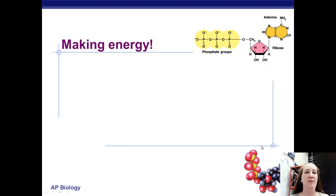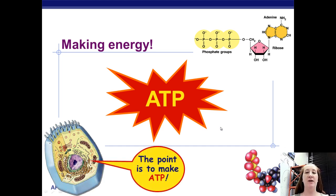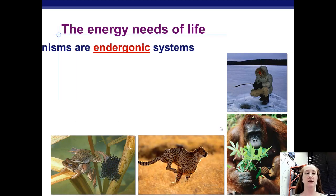Alright everybody, so we just finished talking about enzymes and how they help lower the amount of energy that's needed to get a reaction started. Throughout this whole biochemistry unit, we've been talking about energy a lot. But what is the form of energy that your body actually uses and manipulates? Well, it is ATP. So we're going to spend a little bit of time right now talking about what ATP is and how it works.